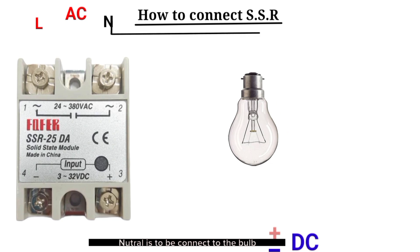Neutral is to be connected to the bulb directly. The live will be connected to the common terminal of the SSR, and the output of the SSR will be connected to the bulb's second terminal.